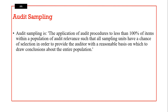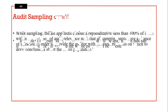Under audit sampling, it is important to appreciate that auditors do not examine transaction by transaction — examining the entire transaction catalog of their clients — for that would be prohibitively expensive. So they employ sampling. Audit sampling means the application of audit procedures to less than 100% of items within a population of audit relevance, so that all sampling units have a chance of selection, providing the auditor with a reasonable basis to draw a conclusion about the entire population.